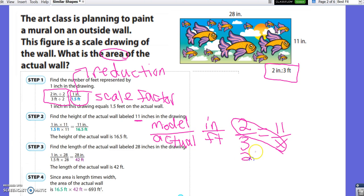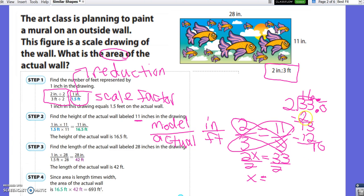We have our cross products, 2x. 11 times 3 is 33, and we divide by 2. x is equal to 33 divided by 2. 2 goes into 3 once. 1 times 2 is 2. Subtract and get a 1. Bring down the 3. 2 goes into 13 six times. 6 times 2 is 12. Subtract and get a 1. Add a decimal, take it into your answer, and add a 0. 2 goes into 10 five times. 5 times 2 is 10. So we get 16 and a half for the height of the actual wall.